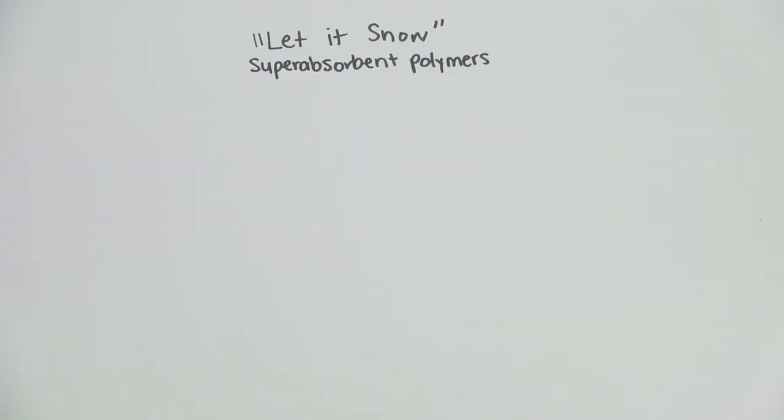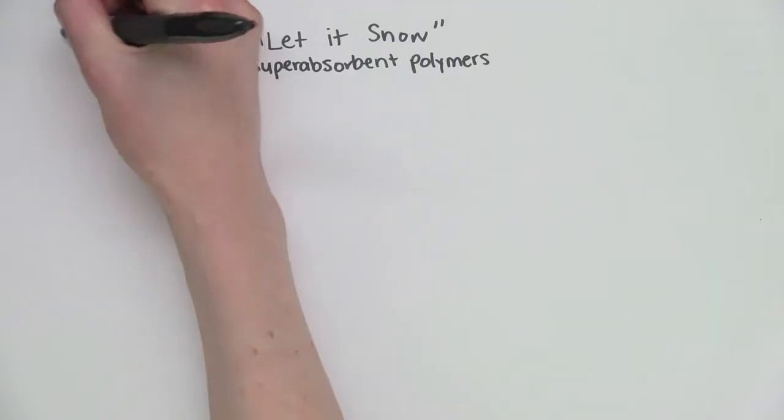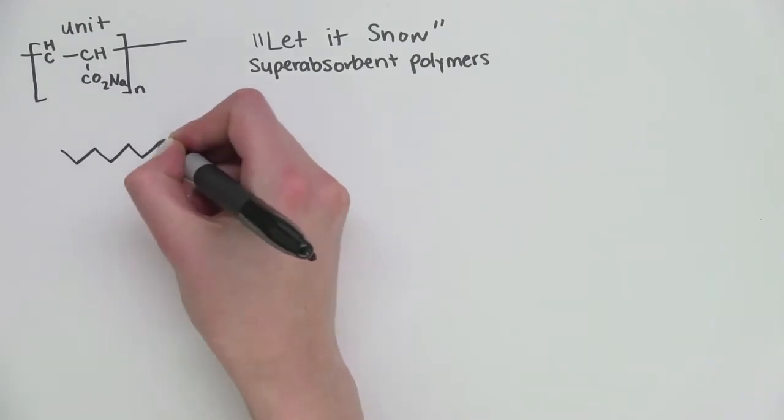So what happened? Well, Ariel was holding a beaker containing some sodium polyacrylate, which is a polymer. Now, a polymer is a big molecule that's a chain of repeating units. This is the unit. And this is what it looks like in a chain.